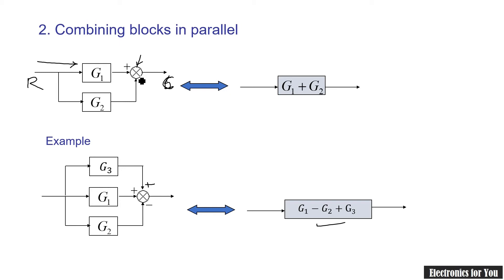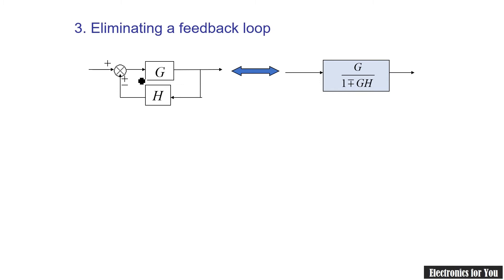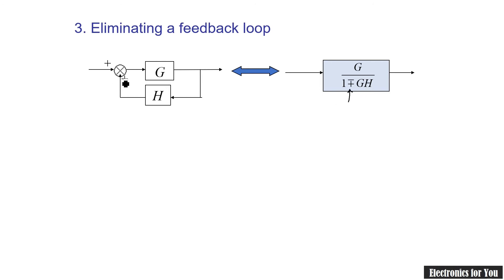The third rule is eliminating a feedback loop. Here G is the transfer function of the forward path and H is the feedback path transfer function. If the feedback has a plus or minus sign, after elimination it can be converted into a single block: G divided by (1 minus-plus GH).